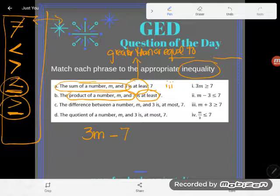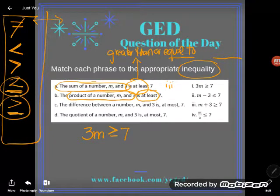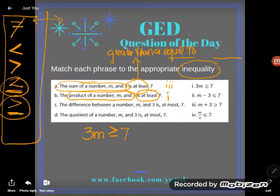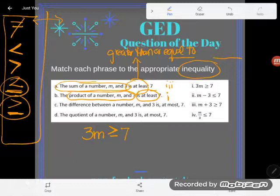So at least we said means greater than or equal to, so 3M is greater than or equal to 7. So B is 1. Okay?